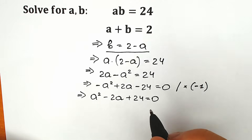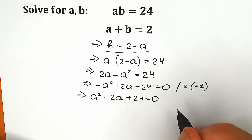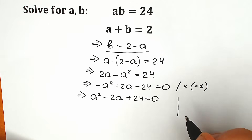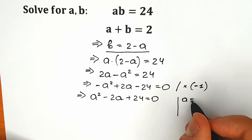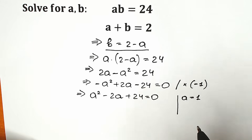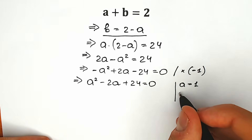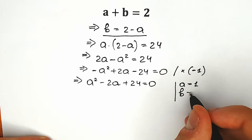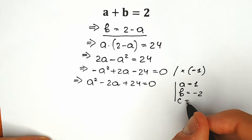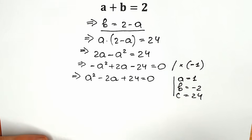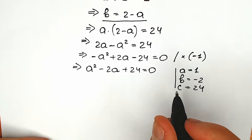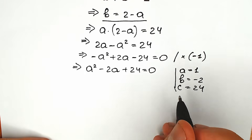Right now let's solve this quadratic equation — this is a basic quadratic equation. Let's use our basic method of coefficients. We have a equal to 1, b equal to minus 2, and c equal to 24. Let's plug each of these coefficients into our formula.